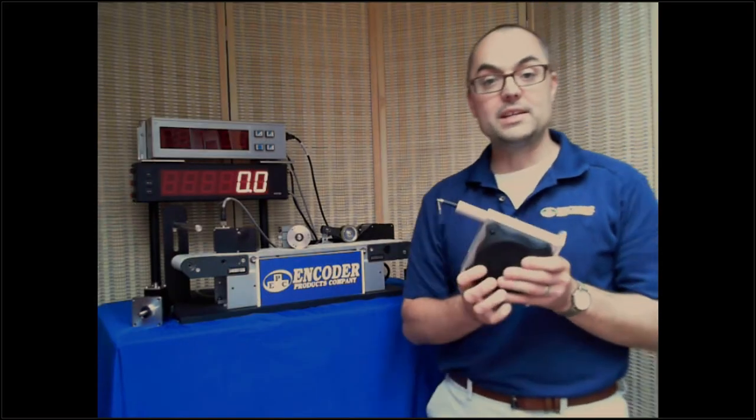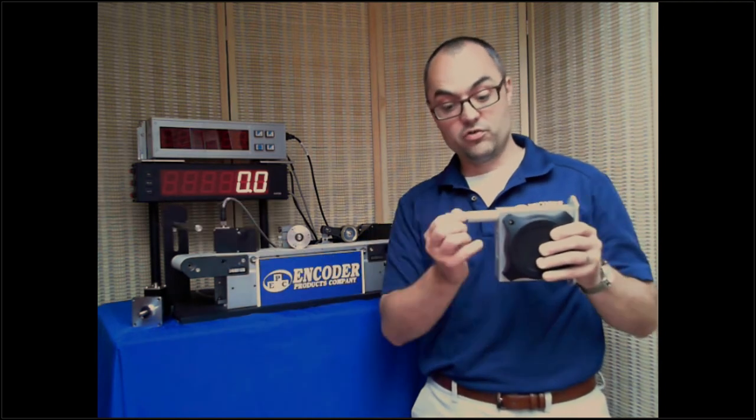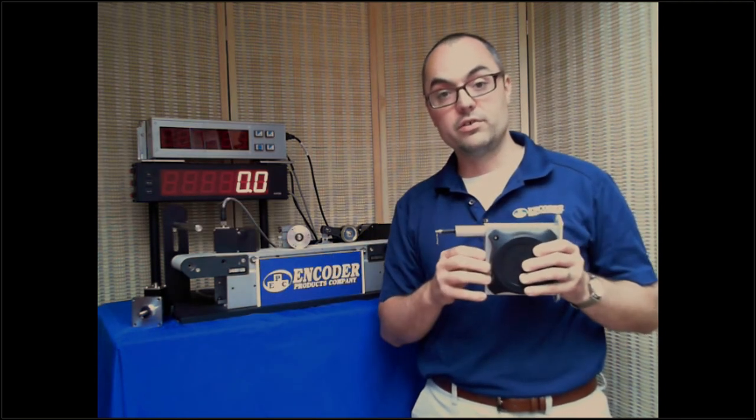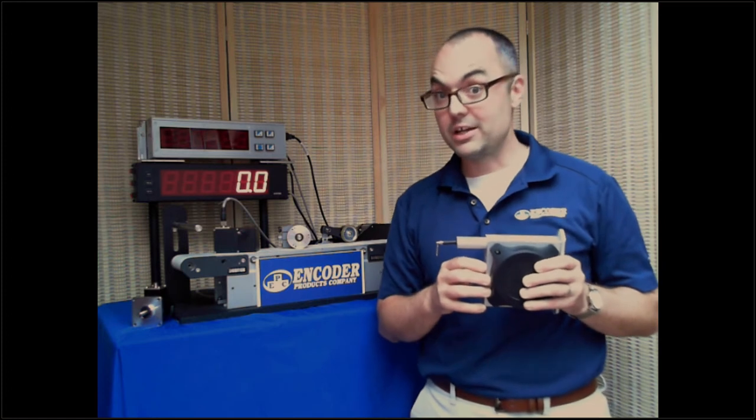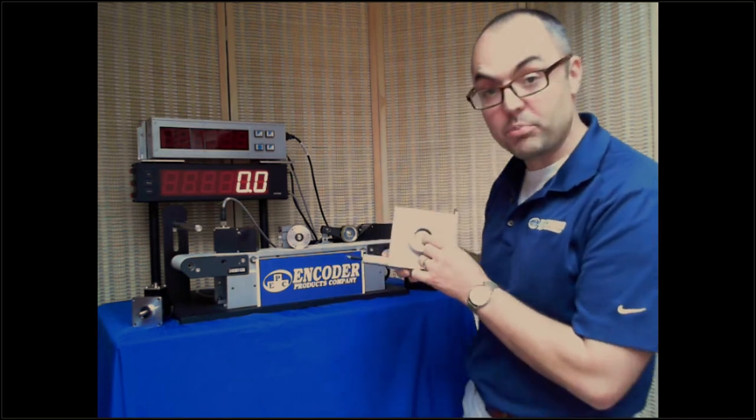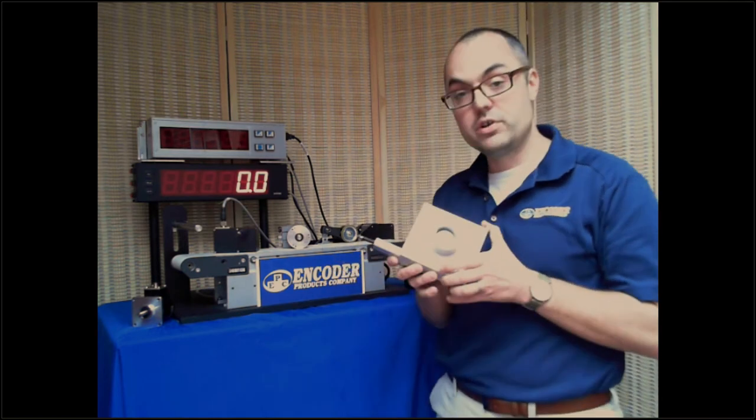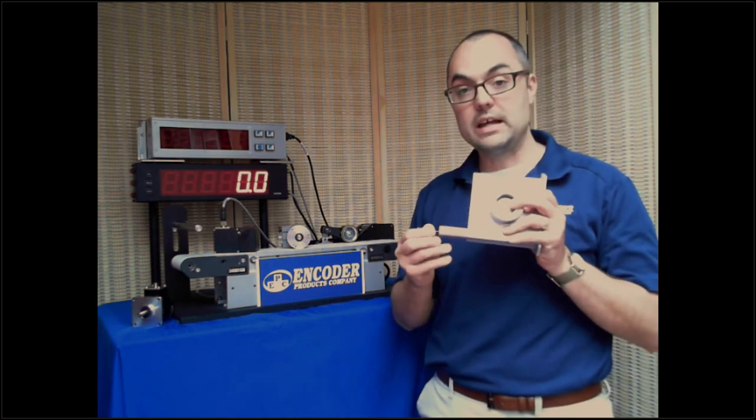A draw wire encoder eliminates the need for an expensive scale even over long distances. This draw wire itself can go to 42 and a half meters. That's pretty far and you're not investing for that length of scale. Because of the hard coupling of the drum to the encoder, there's no backlash in here. So you can repeatedly measure that linear distance over and over as you could with a scale.